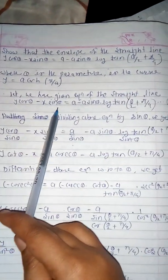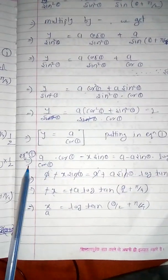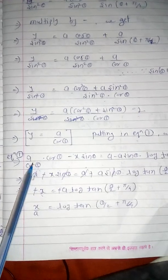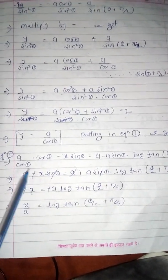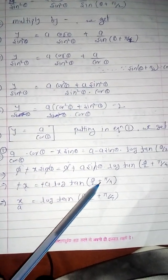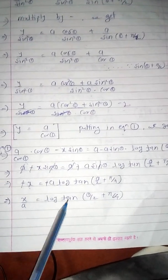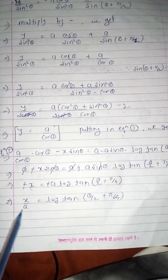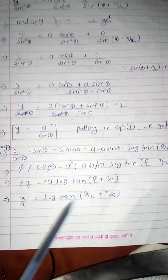Now substituting the value y = a/cos θ back into equation 1: y·cos θ − x·sin θ = a − a·sin θ · log(tan(θ/2 + π/4)). The cos θ cancels and a cancels, giving x = a·log(tan(θ/2 + π/4)), so x/a = log(tan(θ/2 + π/4)).